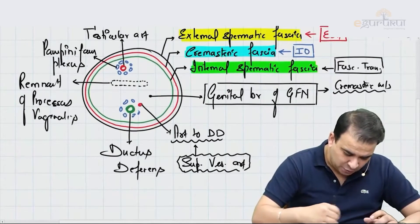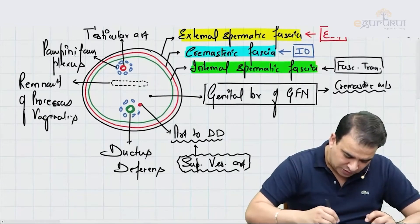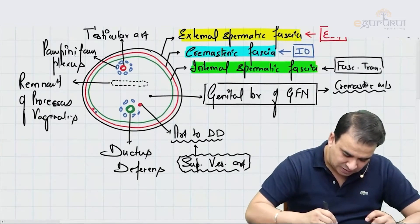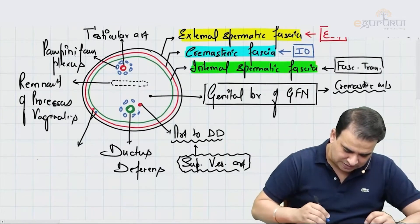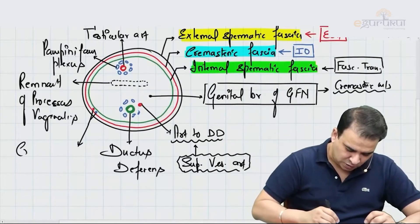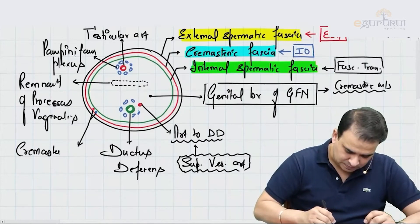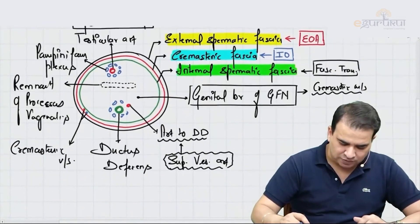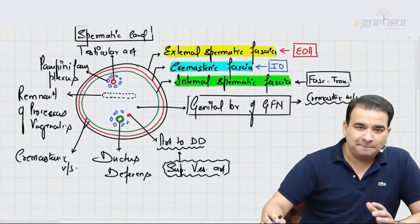What else will be seen within the layers of the spermatic cord: we will also appreciate some blood vessels supplying the cremasteric muscle and fascia, and these are the cremasteric vessels which are also to be seen in the spermatic cord. So these are the contents of the spermatic cord.